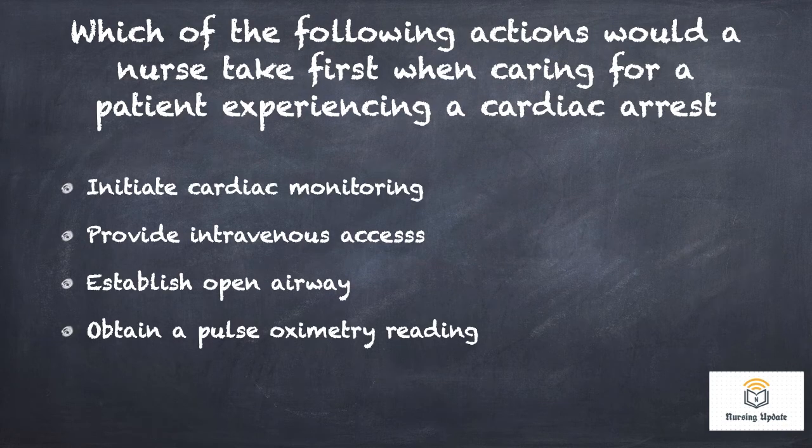Which of the following actions should the nurse take first when caring for a patient with cardiac arrest? Option A — initiate cardiac monitoring; Option B — provide intravenous access; Option C — establish open airway; Option D — obtain a pulse oximetry reading. Answer is: establish open airway — airway first.